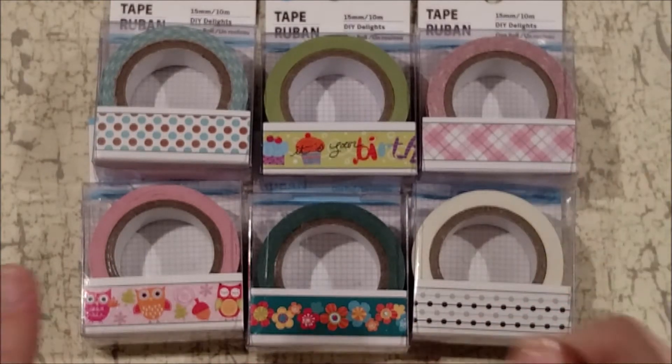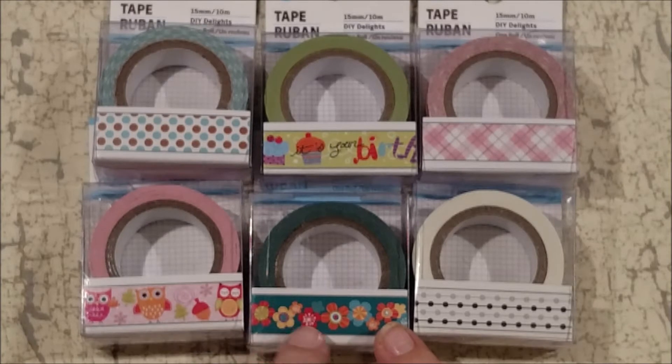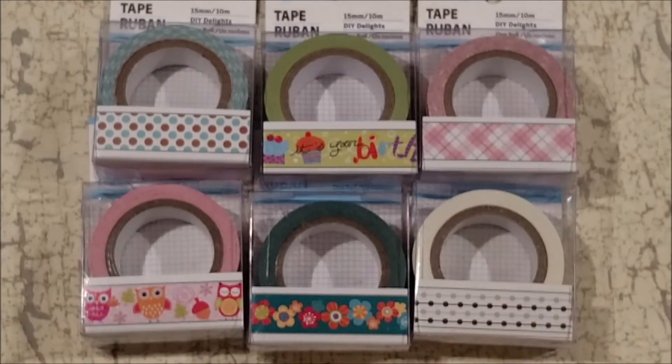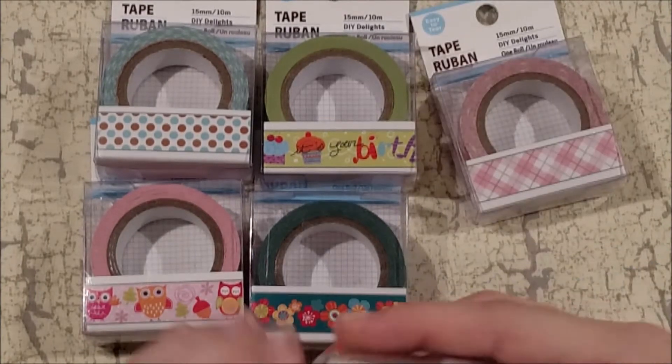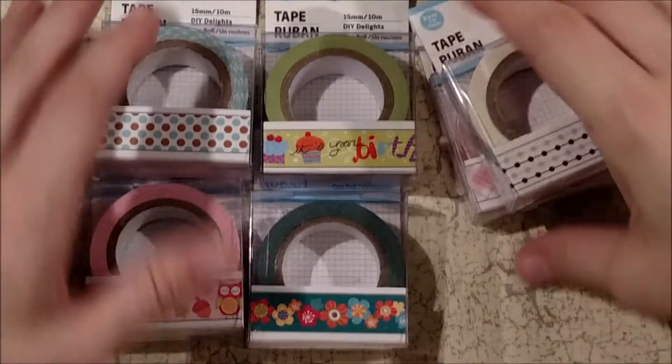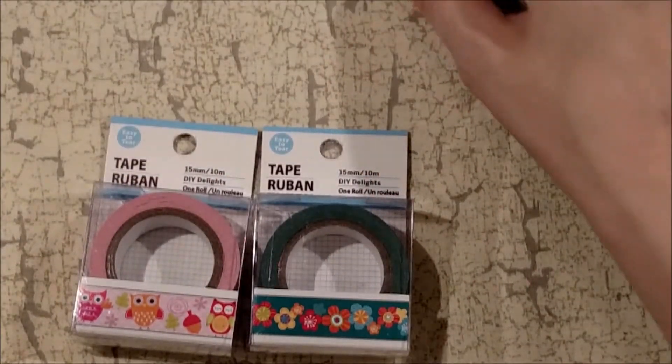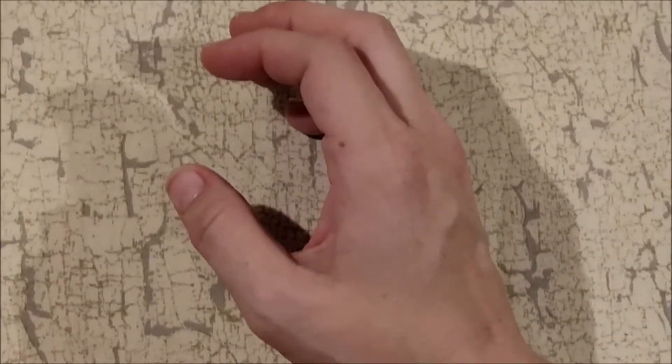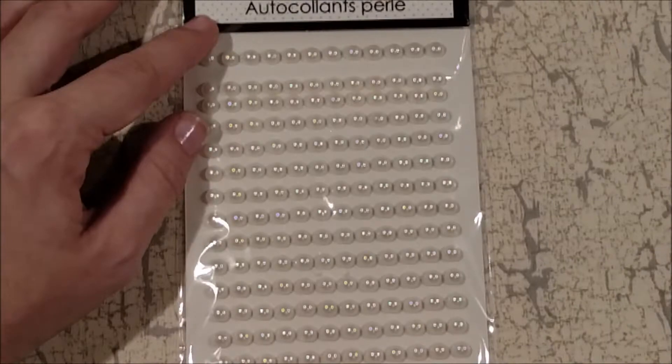Then this one here I thought would be fun for fall for my Target planner because of the very retro fall colors and then black and gray with little stripes in the middle. So those are the six new washi tape from Dollar Tree that I decided to pick up. They did have more but I've decided that if I don't love it I'm not gonna buy it.